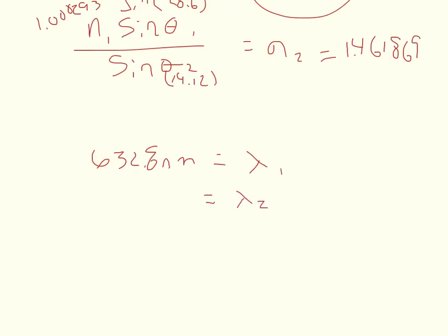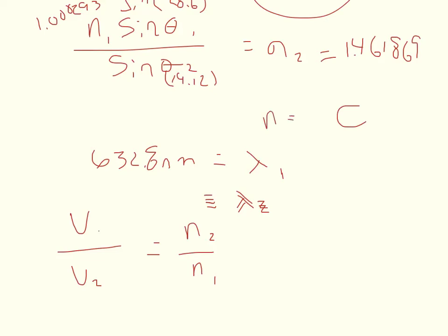So we're going to start off with the definition — the proportionality constant. The velocity 1 divided by velocity 2 is equal to N2 over N1. Remember when we first defined the index of refraction, we said N is equal to the speed of light divided by the velocity in medium 2. The index of refraction for the speed of light equals 1, so N1 cancels out and you just get N2.